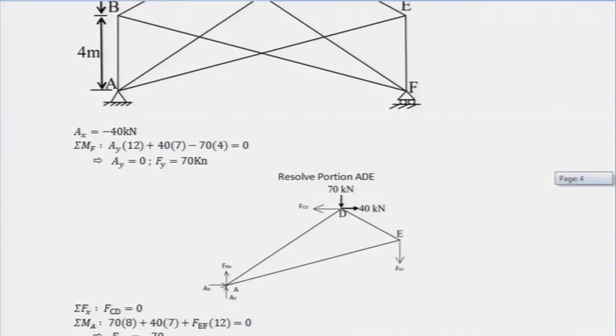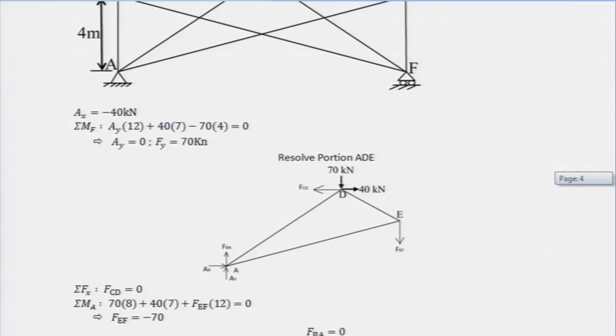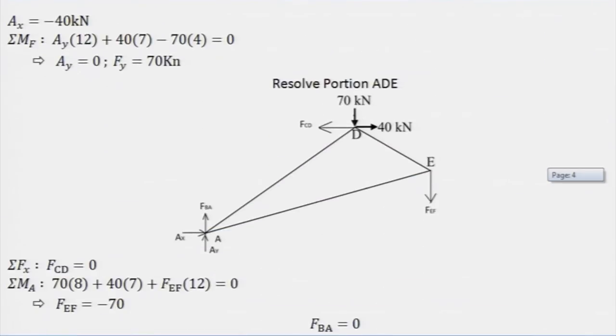Now what has been done? Just detach one of this truss. I mean I have detached here ADE. If you detach ADE, now you will see there are three unknowns: that is FCD, FEF, and FBA. So therefore these three unknowns can be solved by taking the equilibrium of this. The free body that I am really looking for is shown here. Remember this is ADE, which is a basic triangular truss. That is the free body I am really looking at.